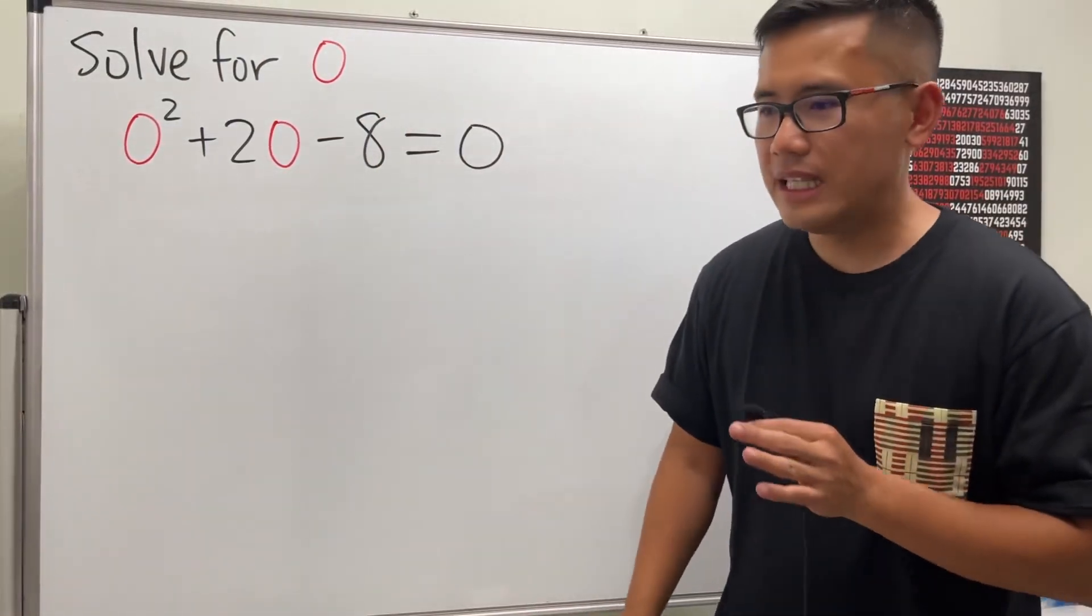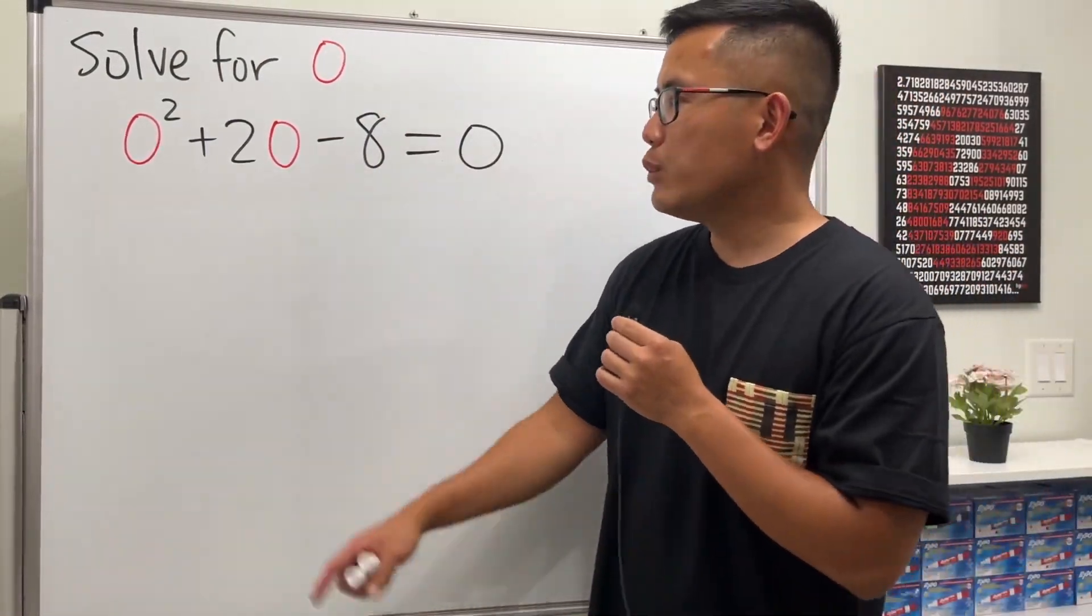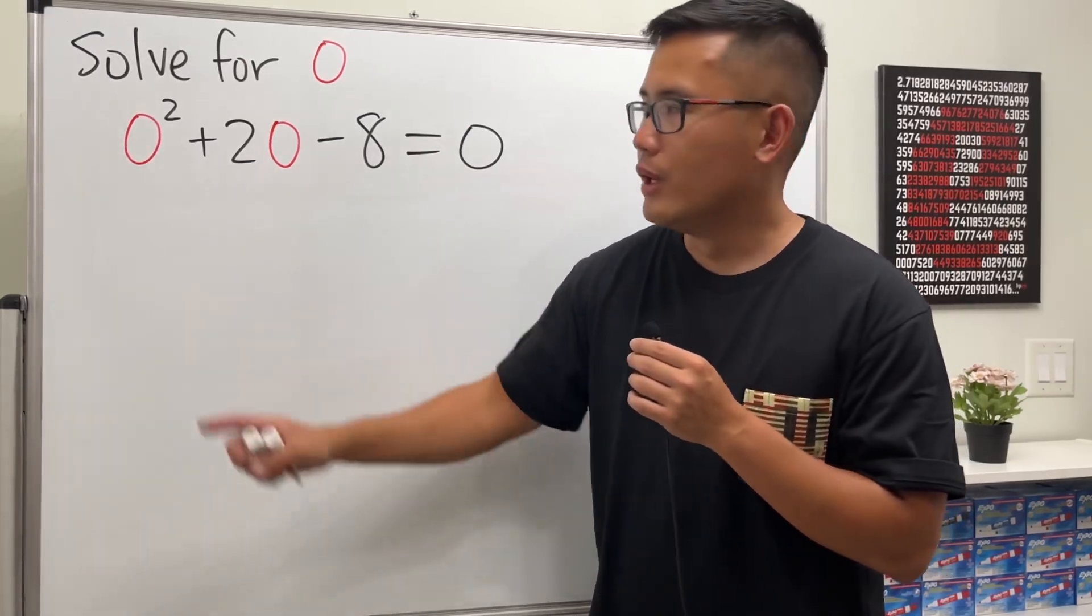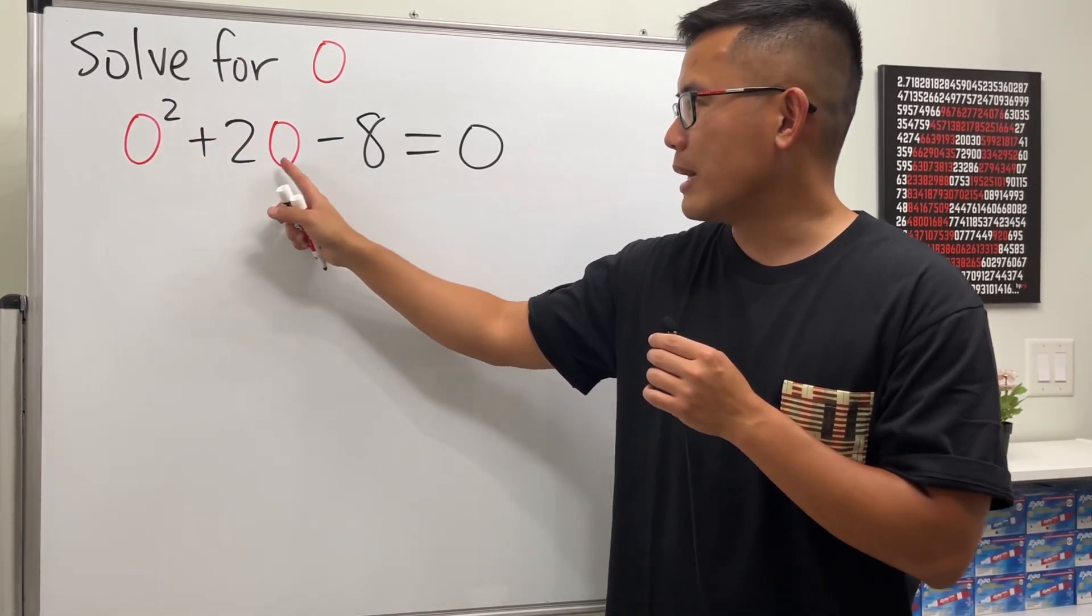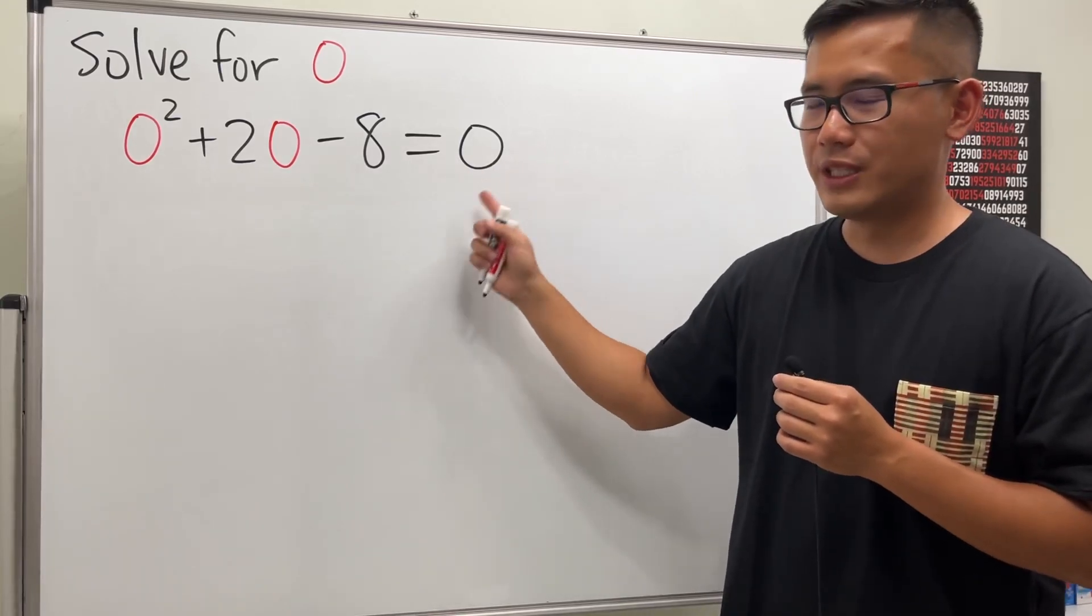I wanted to show you how it looks like if you use O as our variable. Here we have a quadratic equation in terms of O. We have O squared plus 2 times O minus 8 is equal to 0.